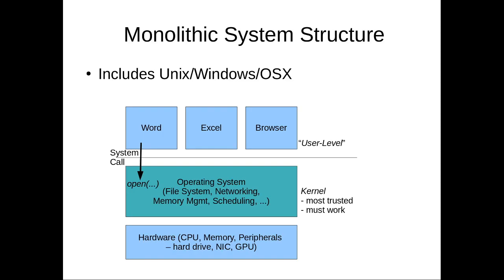Revisiting the notion of a monolithic operating system — this is effectively Unix, Windows, OS X. How I want you to think about monolithic operating systems is that you have user mode and kernel mode provided by dual mode hardware. You have the hardware on the very bottom managed by the operating system that runs in kernel mode. And then above that, in user mode, we have separate virtual address spaces organized into your applications: Word, Excel, your browser, etc. Those are all different address spaces executing at user level.